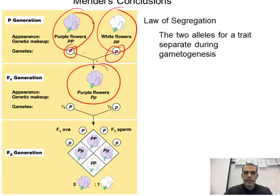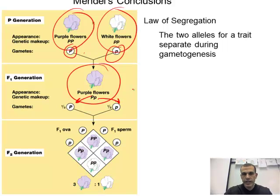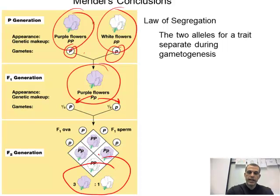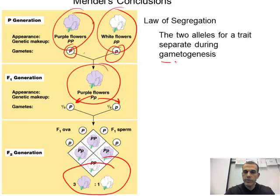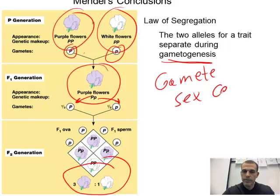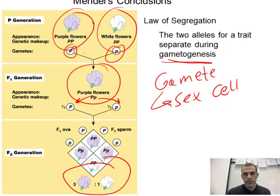What he did then was he let them self-fertilize. Initially, the alleles break off and the offspring would have a half a chance — one out of two — to get big P, or to get little p. You can see how the numbers play out, and when he came out to the second generation he got the three-to-one ratio. So the law of segregation deals with the separation of these gametes, or gametogenesis.